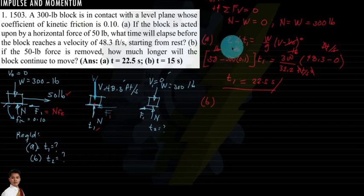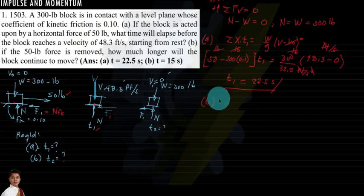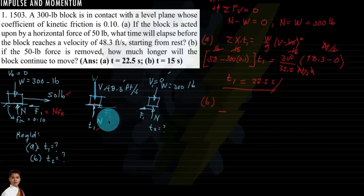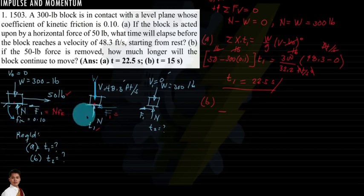For letter B, from the point where the 50-pound force is removed, the forces involved along x are only the friction force, since there is no longer any applied force along the direction of motion. The summation of forces along x yields only the negative friction force. Taking summation of forces vertically, N still equals W, so the friction force is the same as before.